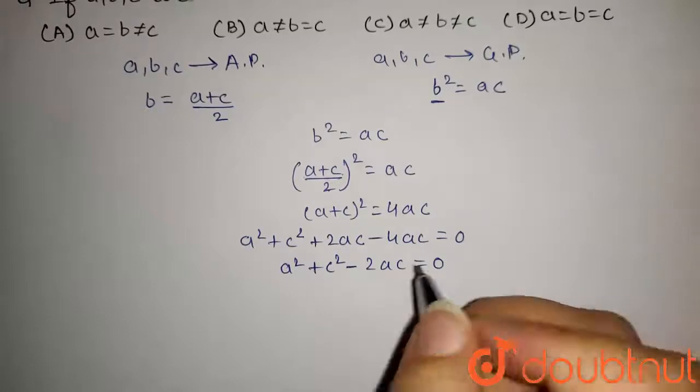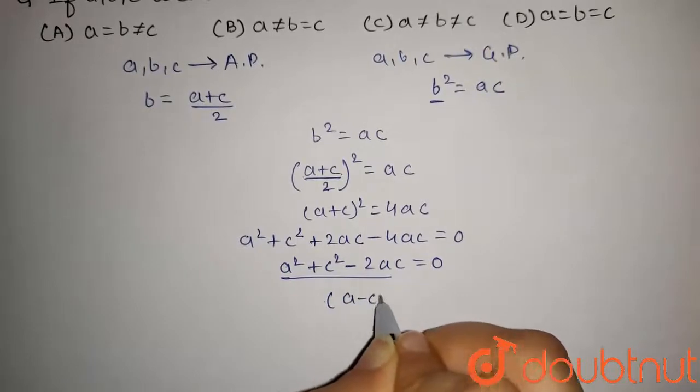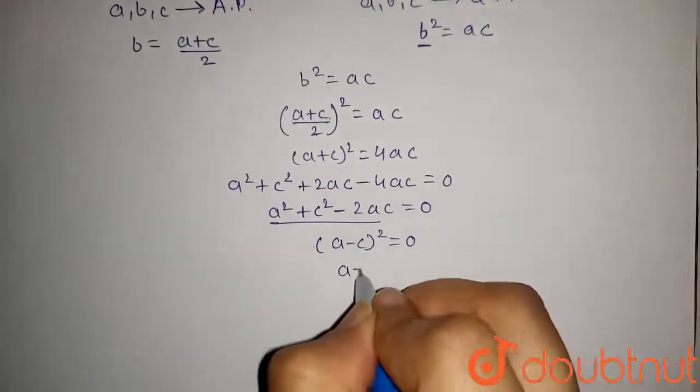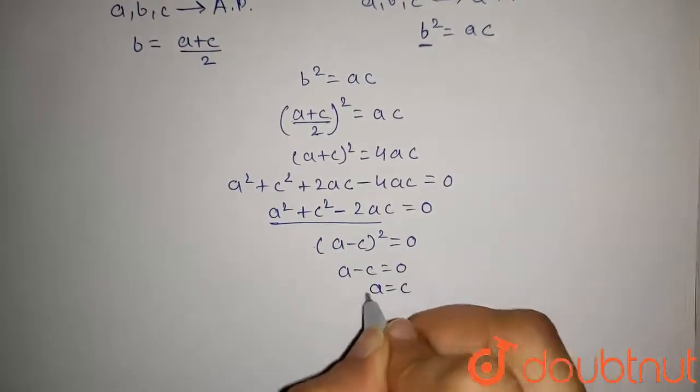Applying that formula here, we can write this as A minus C whole square equals 0, or A minus C equals 0, which gives us A equals C.